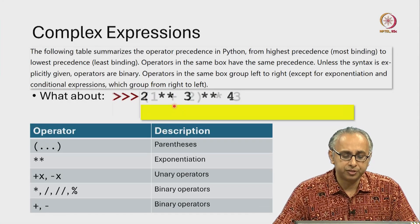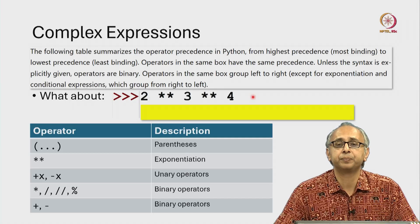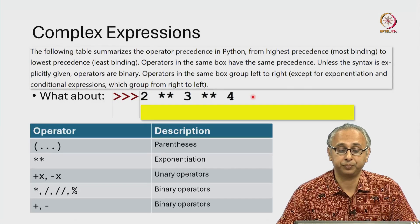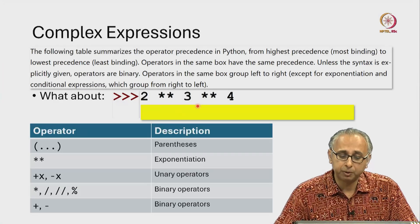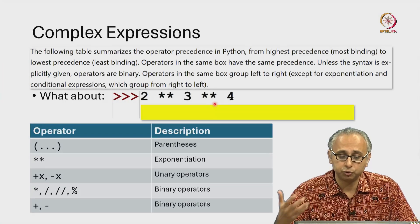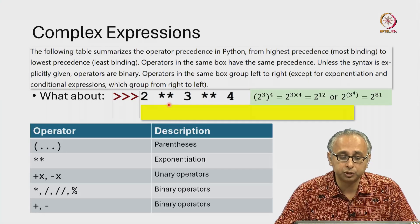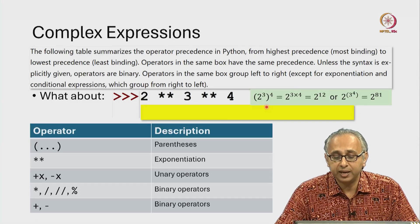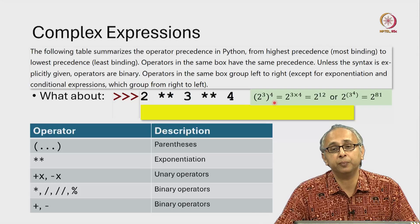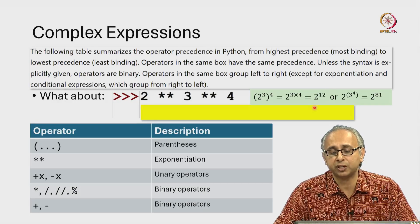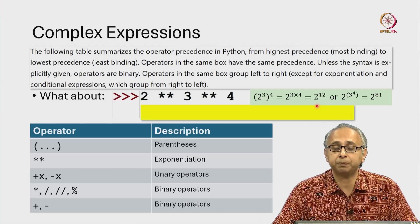Now what about this expression? This uses exponentiation, the star star operator and once again there are probably two ways in which you could imagine this could be evaluated. First we could take 2 to the power 3 and raise that to the power 4 and if we follow the normal rules of exponentiation you will convince yourself that you will get 2 to the power 12.